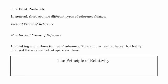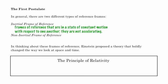In order to generate Einstein's first postulate of special relativity, we need to look at two different types of reference frames. An inertial reference frame — these are frames of reference that are in a state of constant motion with respect to one another, meaning they are not accelerating with respect to one another.